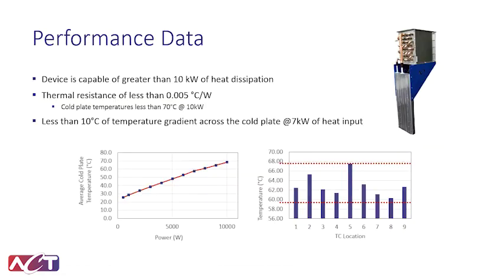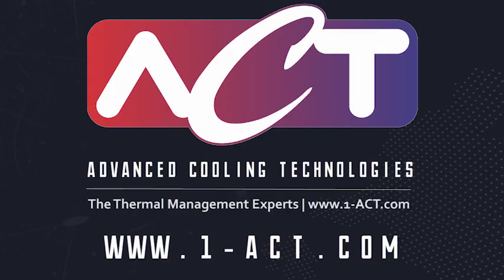Finally, there's performance data shown here. This is for a typical power electronics application where we're dissipating up to 10 kilowatts of heat. We're showing data for 7 kilowatts on the right. You can see that the two-phase nature of the cold plate allows your temperature gradients to be reduced. You can maintain all of your modules mounted on one cold plate within 5 to 7 degrees C even at up to 10 kilowatts of heat. For more information you can find it on our website at www.one-act.com.